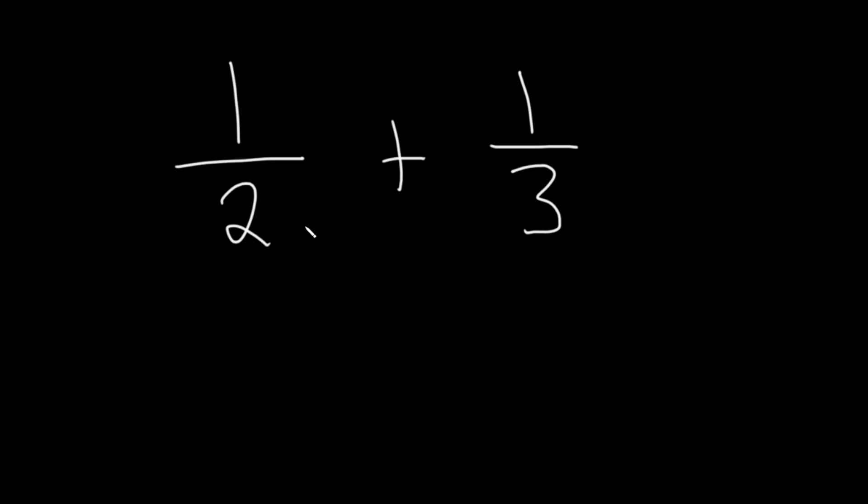And one thing that you can always do is just multiply these two numbers. 2 times 3 is 6. So 6 is your goal. So in order to get a 6 here, we have a 2. We're missing a 3. So what you do is you multiply by 1 in a clever way. You multiply by 3 over 3.